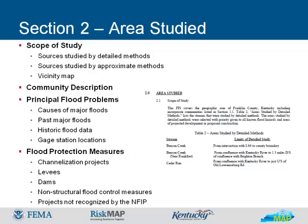Levees are man-made structures or fill along a river that extend above the flood elevation to prevent lower areas from being inundated by the flood. The information in this section includes the type of levee (earthen, concrete flood wall, agricultural, etc.), the name of the agency or organization that maintains the levee, the level of protection provided by the levee, and the frequency of floods for which the levee provides protection.